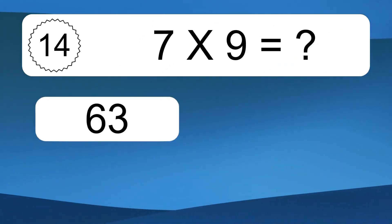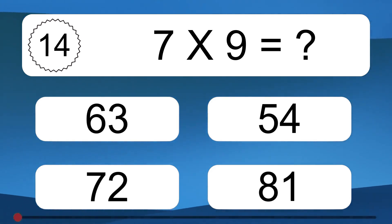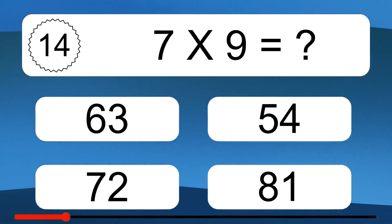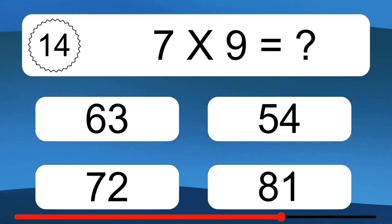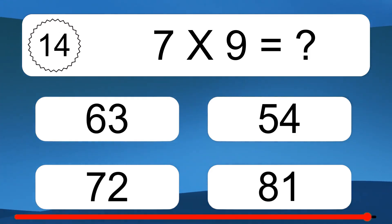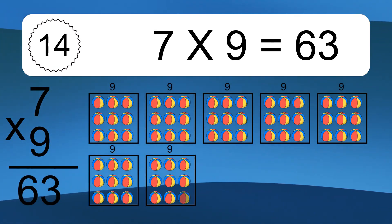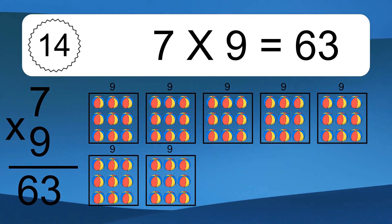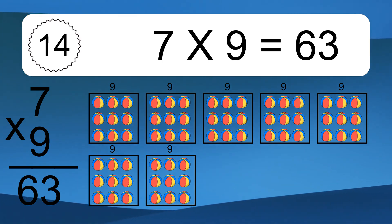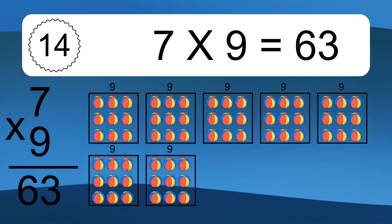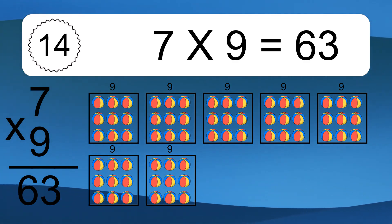7 times 9 equals what? 7 times 9 equals 63. We have 7 boxes, and each box has 9 colorful balls inside. If you count all the balls in all the boxes together, you will have 7 times 9 balls. This equals 63 balls.